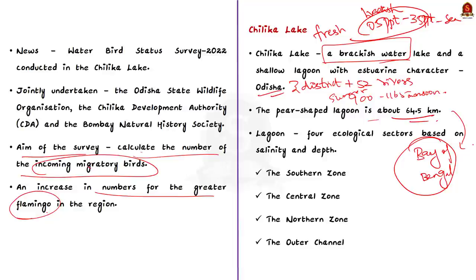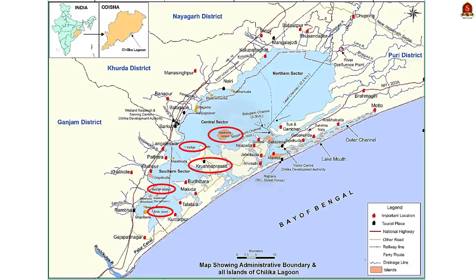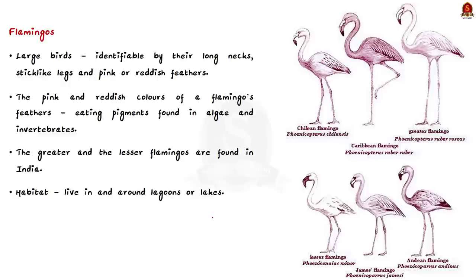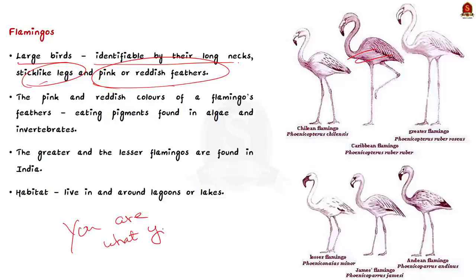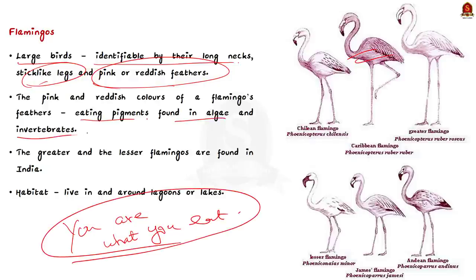This lagoon can be broadly divided into four ecological sectors based on salinity and depth. They are southern zone, central zone, northern zone and the outer channel. A number of islands that are present in the lagoon includes Krishna Prasad, Nalaban, Somolo and Birds islands. Now let's discuss about flamingos. See, flamingos are large birds that are identifiable by their long neck, stick-like legs and pink or reddish feathers. This flamingo embodies the saying, you are what you eat. This is because the pink and reddish color of flamingos feathers come from eating pigments that are found in algae and invertebrates. That is, when they eat the algae which is in pink color, they get pink feathers.